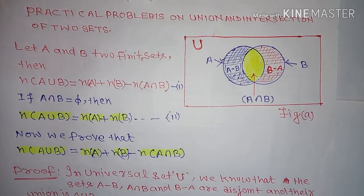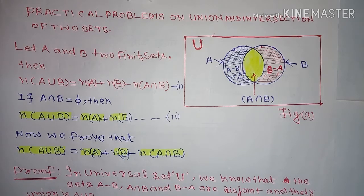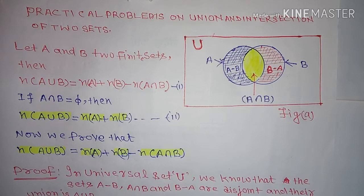Finite sets means the set has a definite number of elements. Then the equation: number of elements in A union B is equal to number of elements in A plus number of elements in B minus number of elements in A intersection B. Here the rectangle represents the universal set and two circles inside the rectangle show its two subsets, subset A and subset B. The shaded area in blue shows A minus B, the shaded area in red shows B minus A, and yellow shows A intersection B.